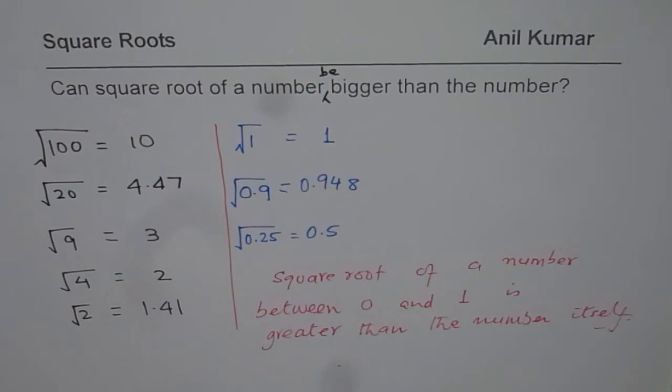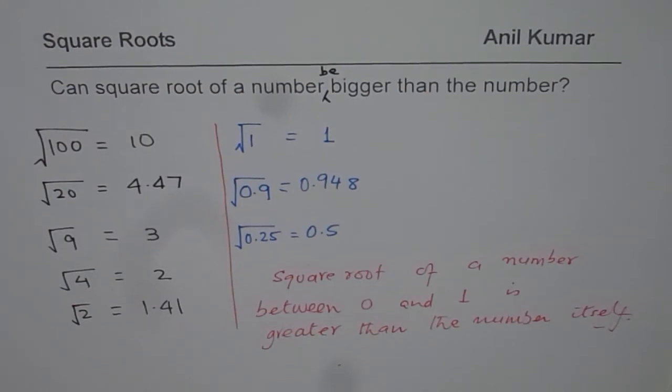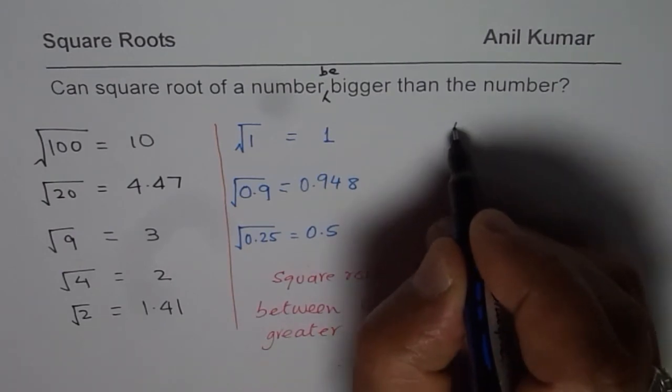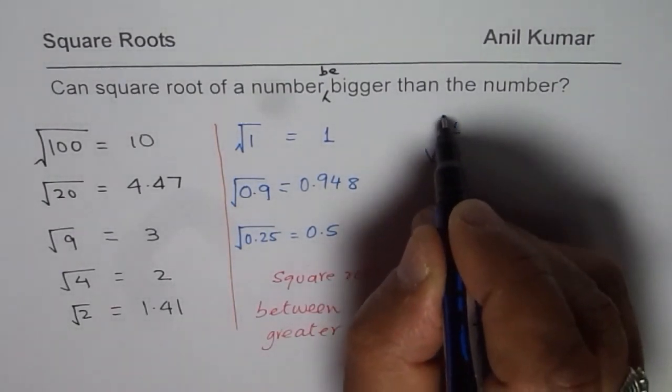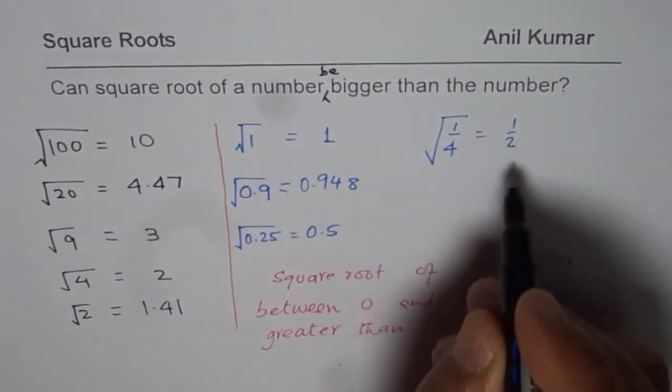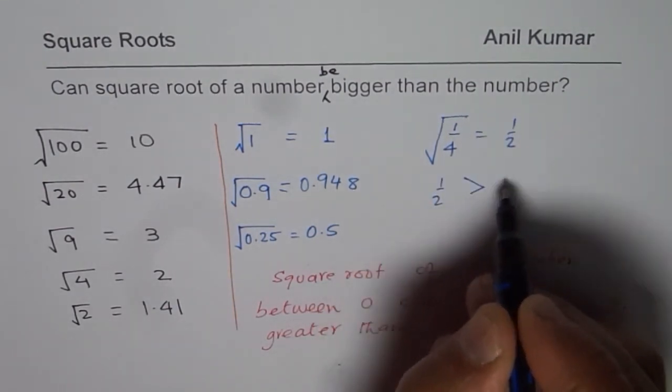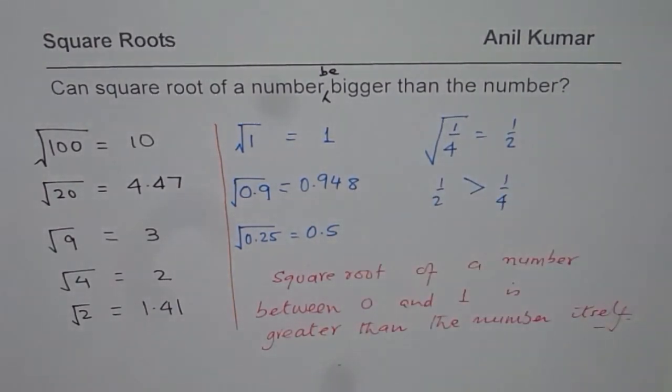So when you say half of half, what happens? Half of half is one-fourth. So square root of one-fourth is half. Do you see? One-fourth. So square root of one-fourth is half, and you know half is greater than one-fourth, correct? It is twice as big as one-fourth.